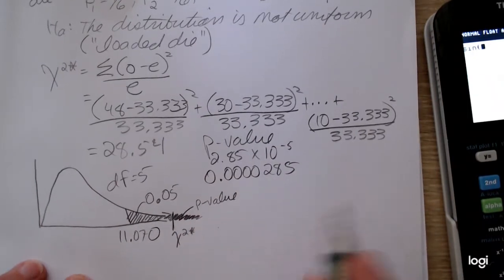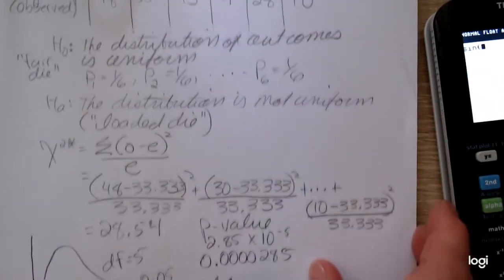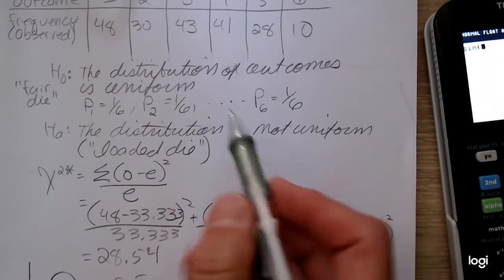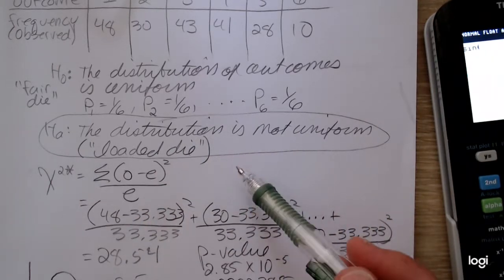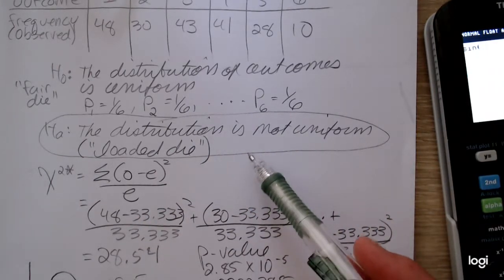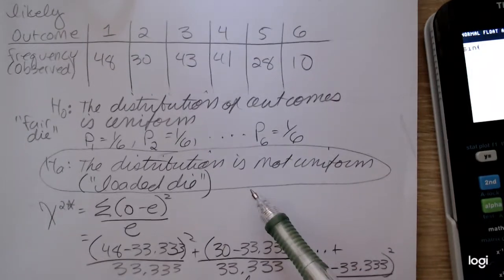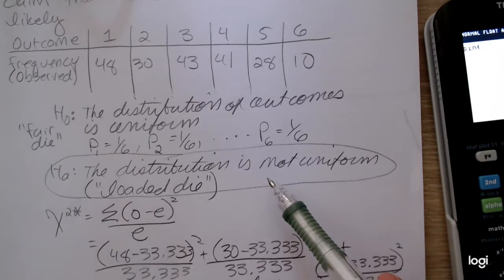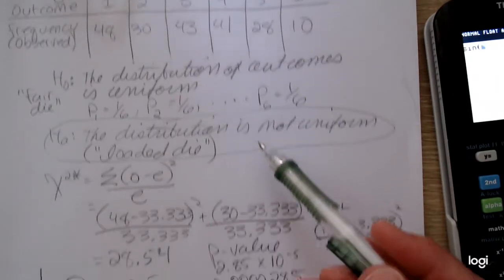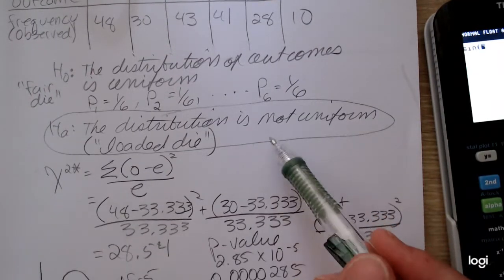So we know the decision is to reject the null hypothesis. So we are in favor of the alternative. So there is sufficient evidence to support the claim or to support the suspicion that the die is not fair and it may be loaded.